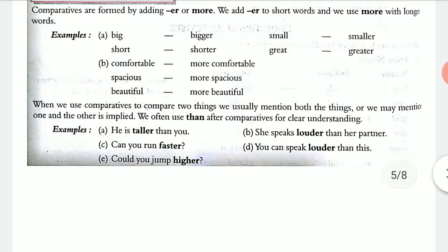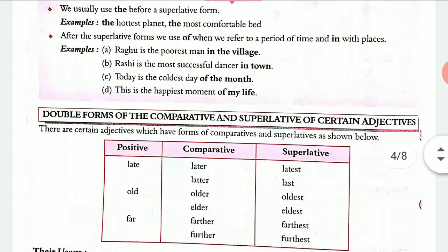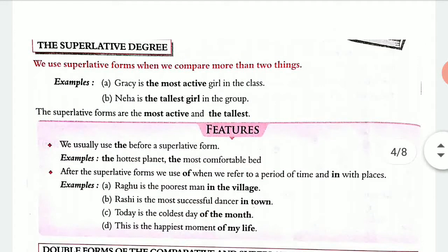Moving on to superlative degrees — we always use the article 'the' and instead of 'more,' we use 'most.' The suffix added is -est. For example, 'Kaneha is the tallest girl in the group' — tall plus -est. For the word 'active,' we say 'Gracie is the most active girl in the class.' So the article 'the' is always used before the superlative form, and 'most' replaces 'more.'